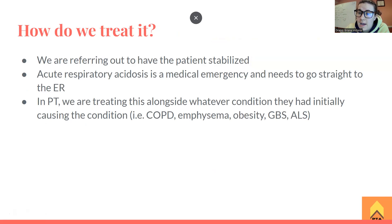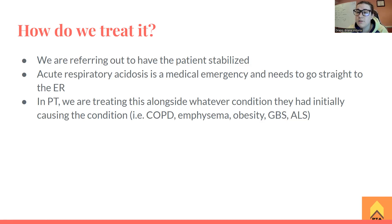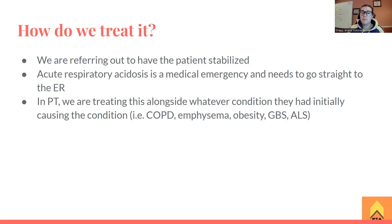So how are we treating it? We are referring out to have this patient stabilized. If it's an acute respiratory acidosis situation, that is considered a medical emergency — they need to go straight to the ER. In physical therapy, what we're doing is monitoring their vital signs, taking SpO2 levels. If they have the ability to get arterial blood gas levels in an acute care setting, we're going to be looking into those as well. If anything looks suspicious toward respiratory acidosis or alkalosis, you should probably call somebody about that. Mainly, if we have this patient, we're going to be treating whatever condition they came in with — COPD, emphysema, obesity, GBS, ALS. When it comes to systemic stuff, that's where we have a multi-interdisciplinary team working with the patient.